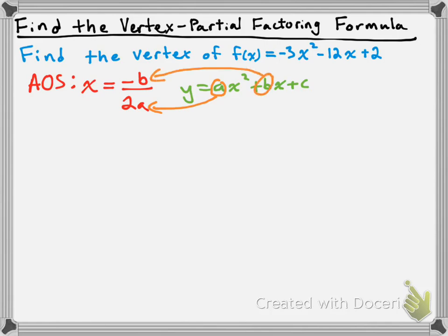Once we take those coefficients — just the coefficients, not the x that goes along with them — and substitute them in, that gives us the equation of the axis of symmetry. The question we need to answer now is: why do we need to know the axis of symmetry given that we're looking for the vertex?